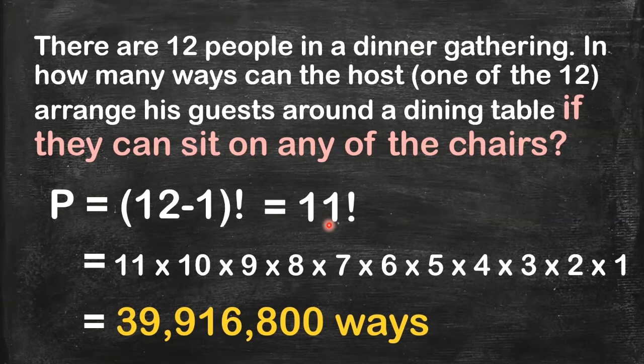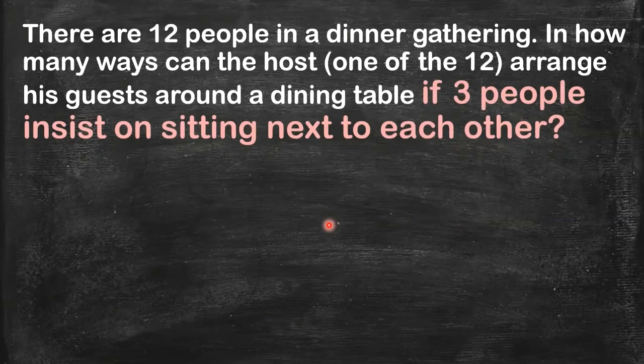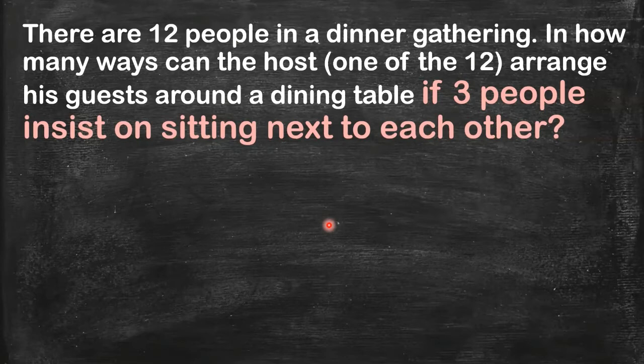Let's deal with the second condition. Again, there are 12 people that we are going to arrange in a circular manner. But this time, three people insist on sitting next to each other — they're BFFs and they want to be seated beside each other. So obviously, the number of arrangements will be less than what we got before because the arrangement is now limited by this special condition.